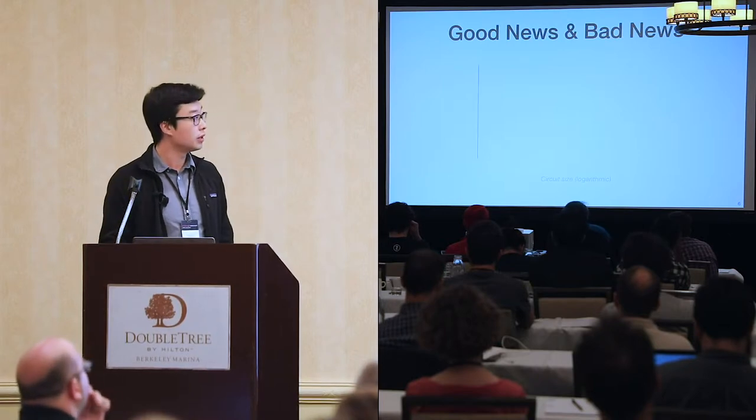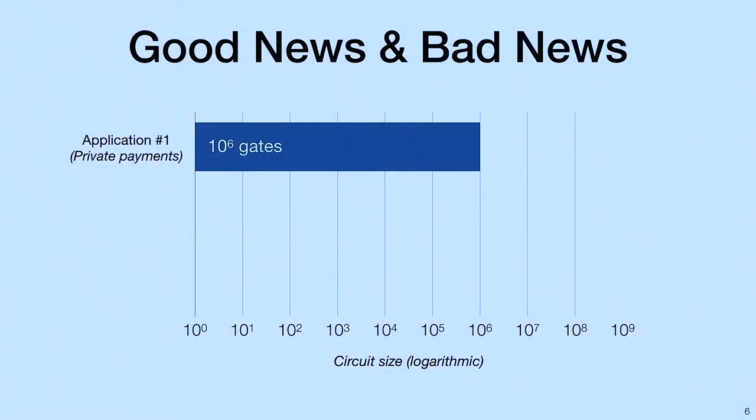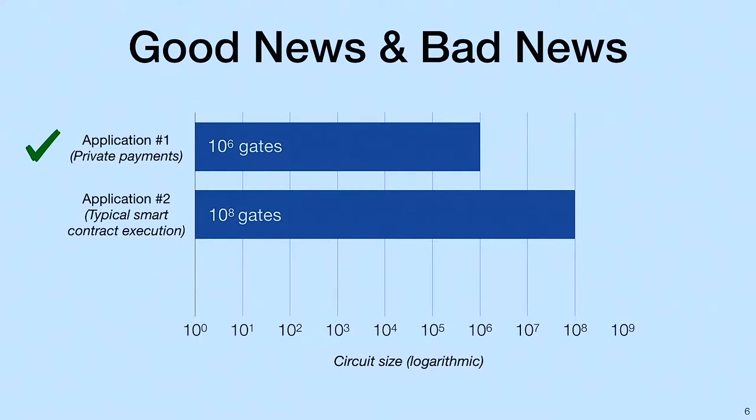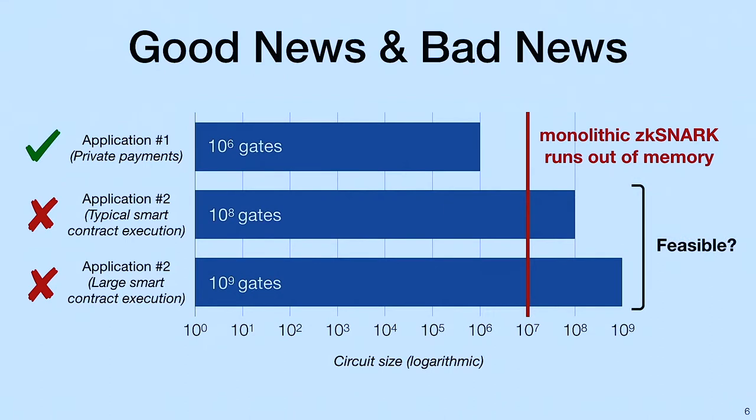There's some good news and some bad news. If we plot the circuit sizes of the applications we just discussed, we see that the private payment application requires about a million gates. This size is practical for generating a proof with current ZK-SNARK implementations. However, if we look at typical smart contract executions, we find that the circuit size is approximately 100 million gates. For a large smart contract execution, we find ourselves using billions of gates. Unfortunately, current monolithic ZK-SNARK implementations run out of memory at around 10 million gates. That makes this application just out of reach of current techniques.